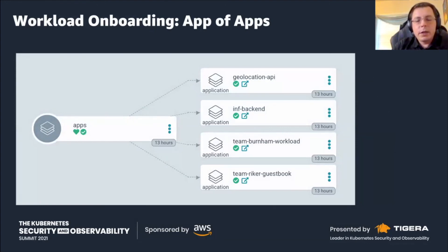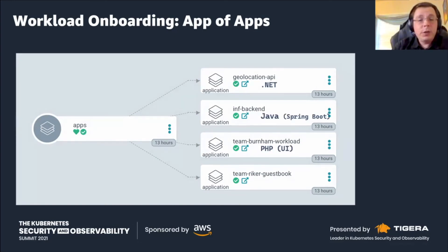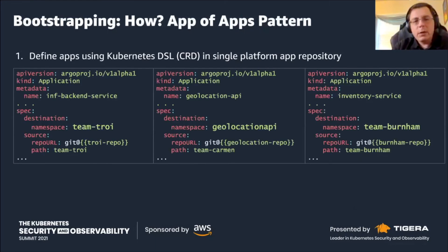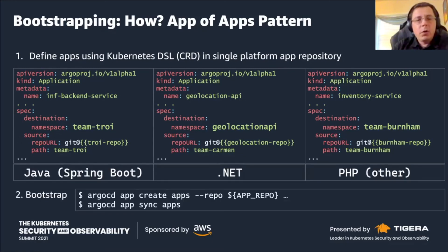Once the teams are defined, we need to start onboarding applications and workloads. That's where we talk about the app-of-apps pattern enabled with ArgoCD. Within ArgoCD, I can define .NET, Java, and PHP GitOps repositories in a single bundle. For example, here's a geolocation API — a .NET application. Team Troy is provisioning a machine learning DJL Java service, and Team Burnham has a PHP app. All those deployment descriptors are effectively CRDs, and once you have them you can bootstrap in a single shot with ArgoCD's create-apps and sync-apps.